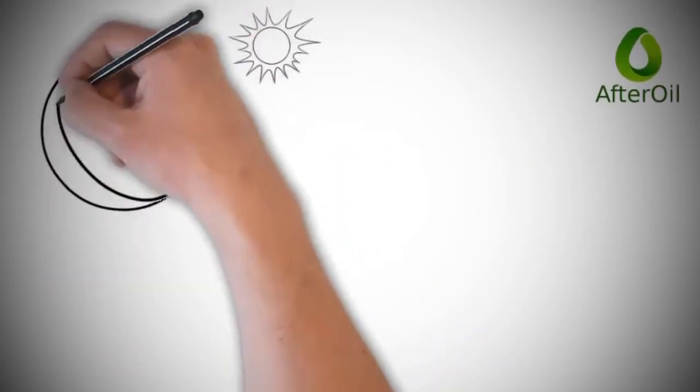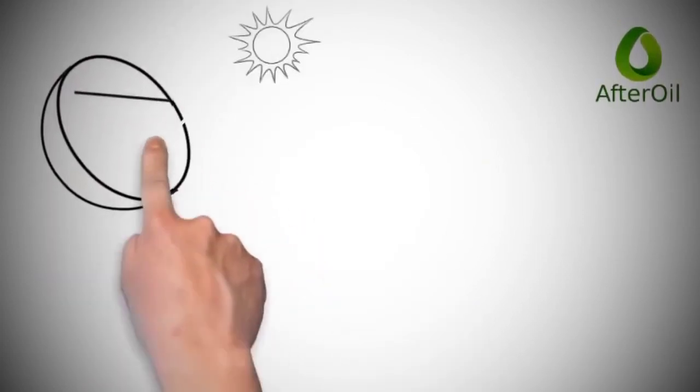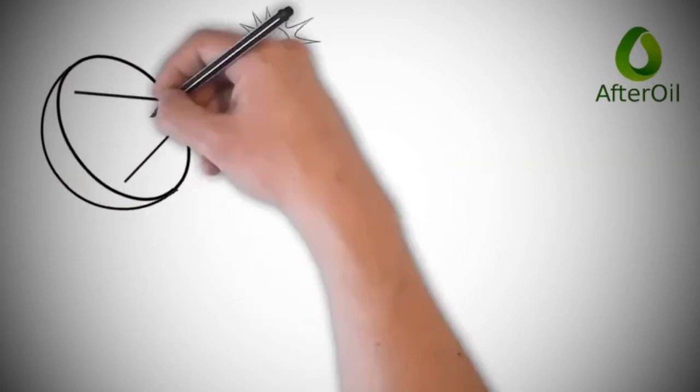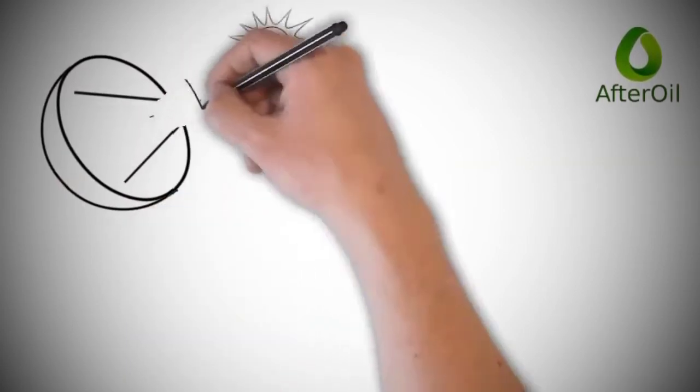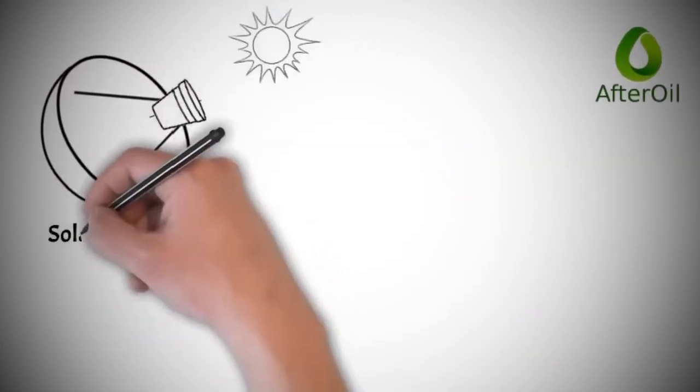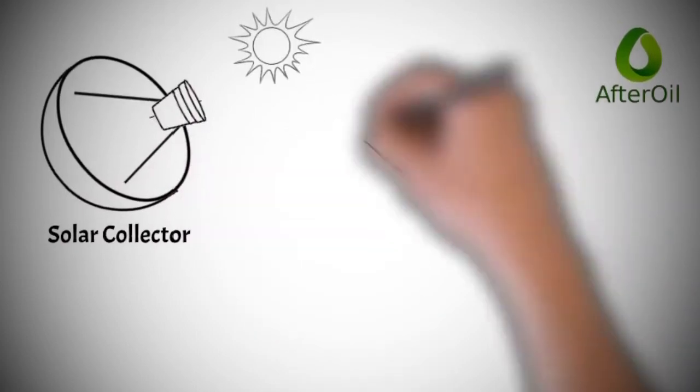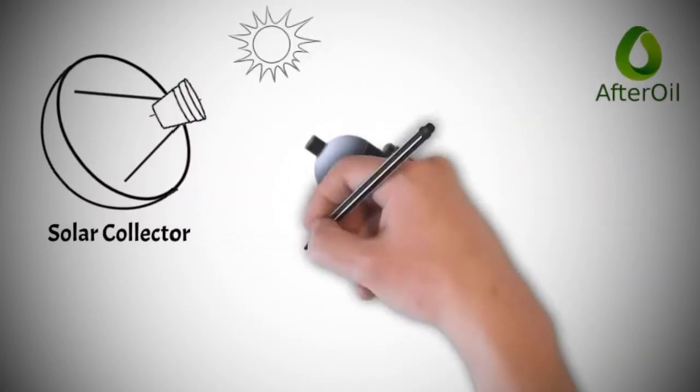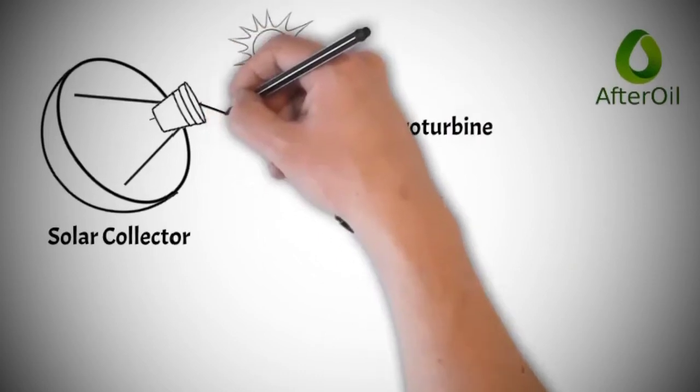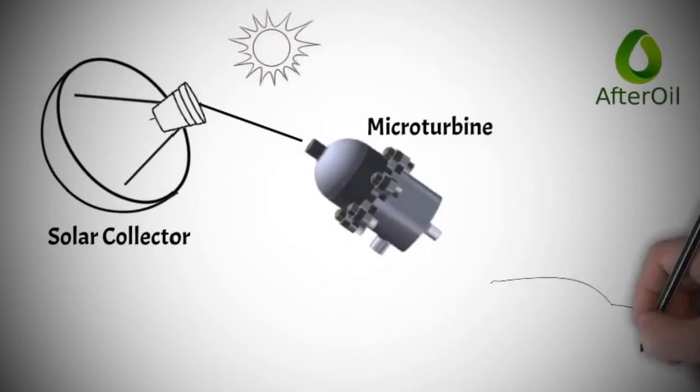By using a solar collector that can be made by yourself because it is simple and does not require expensive materials. With this solar collector through a process called Organic Rankine Cycle, also using locally produced fluid media, it can be used to drive the microturbine to directly generate electricity.